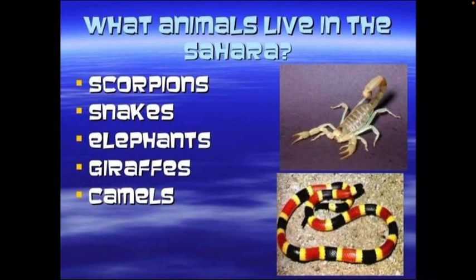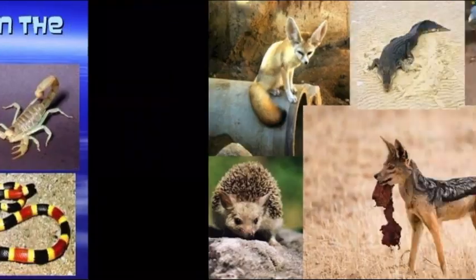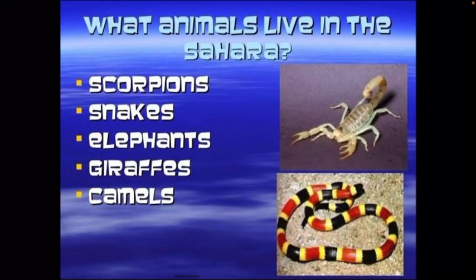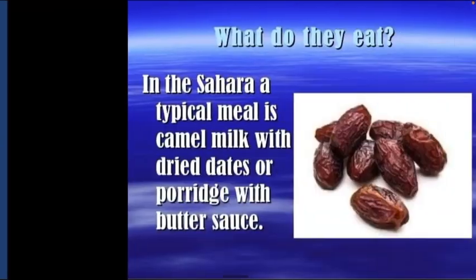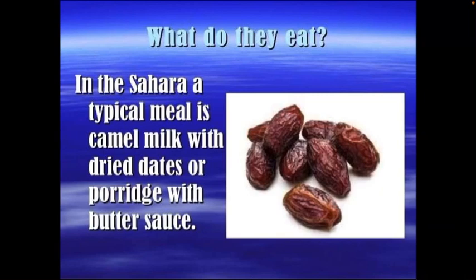The animals found here are scorpions, snakes, camels, etc. There are about 2.5 million inhabitants, that is 1% per square mile. The majority of people here are nomads. The Tuaregs and Bedouins are important nomadic tribes who move from place to place along with their animals in search of water and pasture. The people here eat date palm and drink camel milk, porridge with butter sauce, etc.